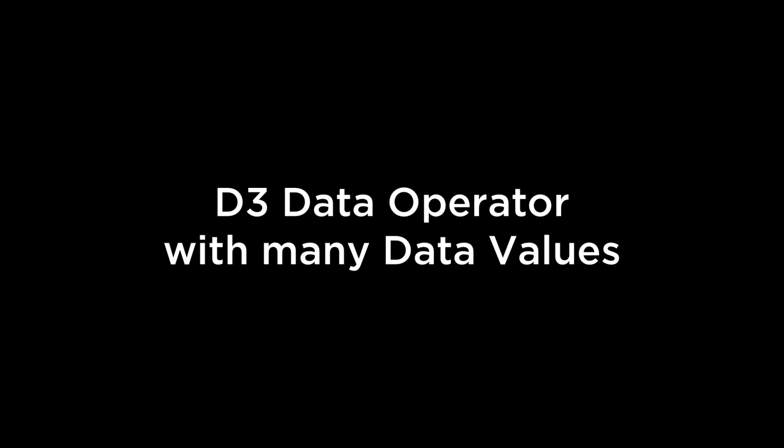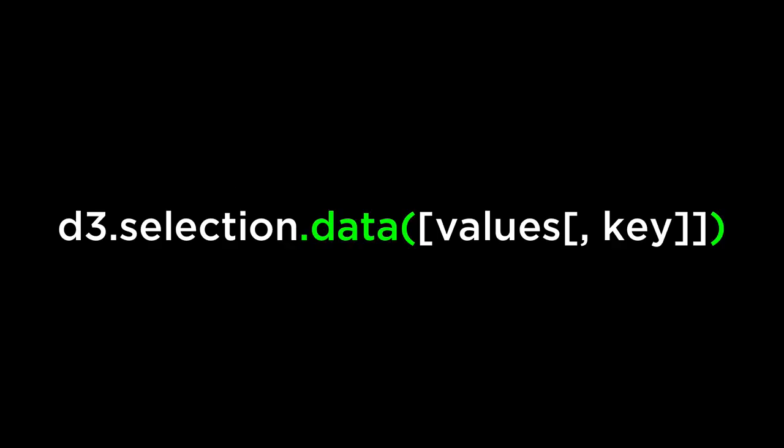Let's continue to look at the D3 data operator. Remember that the data operator joins the specified array of data with the current selection. This time, however, instead of binding one piece of data, we are going to bind two pieces of data — though two is a small number.